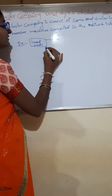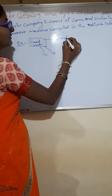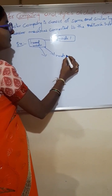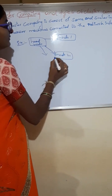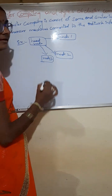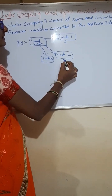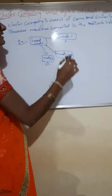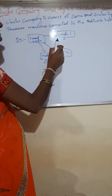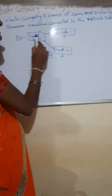For example, there is a head node. The head node consists of similar computers — various computers: Node 1, Node 2, and Node 3. In cluster computing, different computers are known as nodes. These different computers are connected to the head node, which is nothing but the infrastructure.